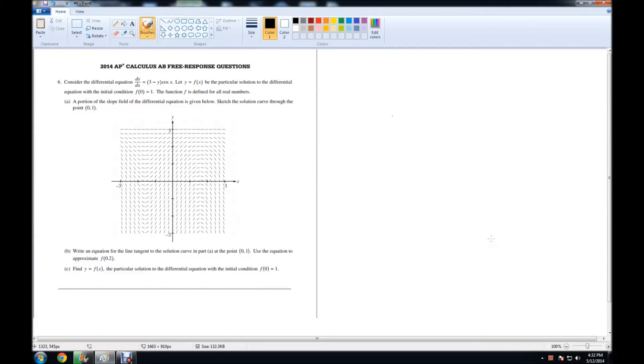For question number 6 on the 2014 AP Calculus AB Free Response, we have a slope field and three parts. We have a differential equation, so let's go ahead and read the problem.